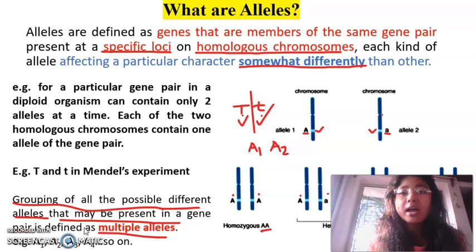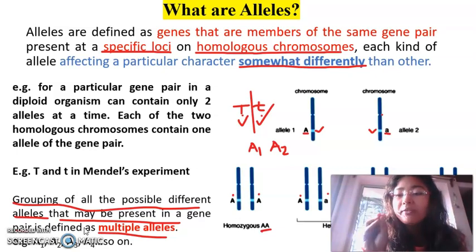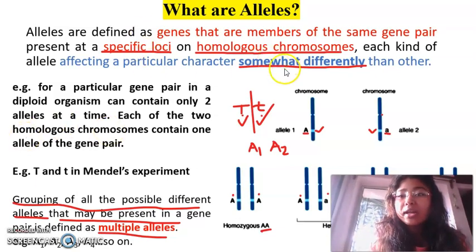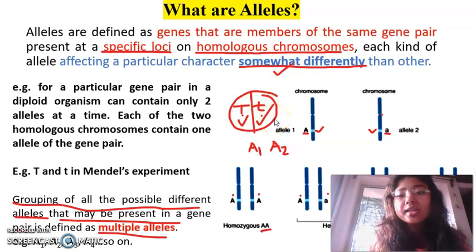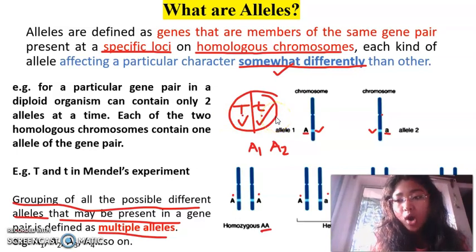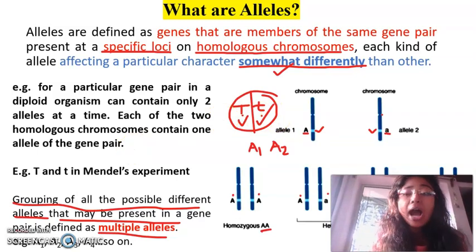Before going to isoalleles, remember that alleles are different forms of the same gene pair which affect a particular character in a somewhat different manner — just like capital T and small t, both denoting height of the plant but capital T denoting tallness and small t denoting dwarfness.